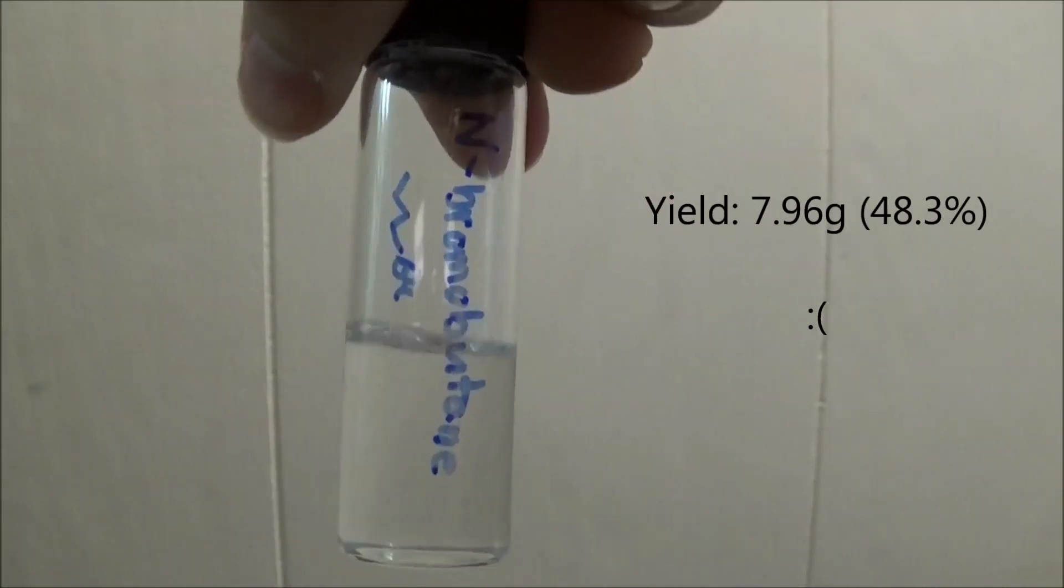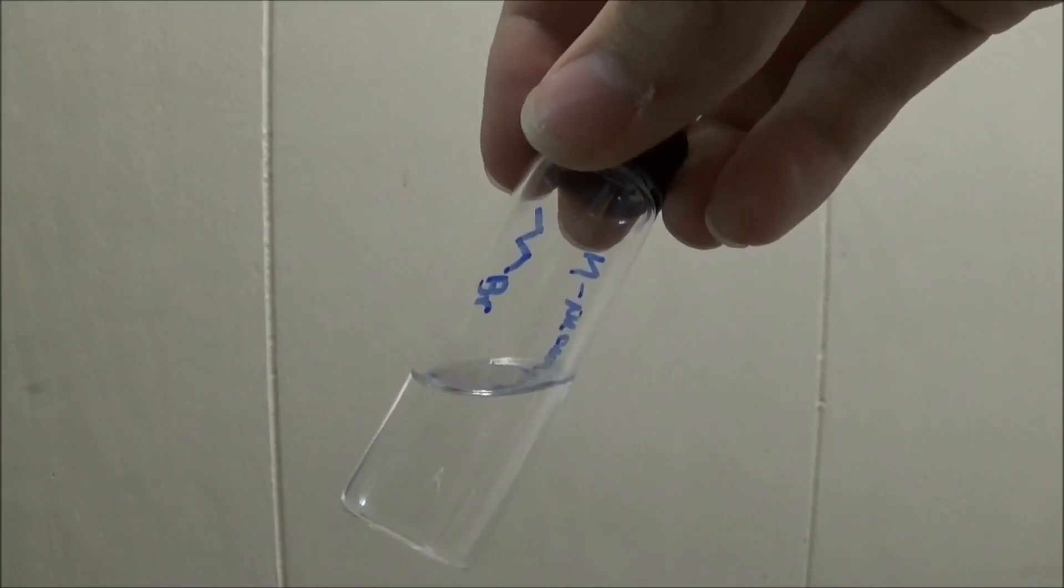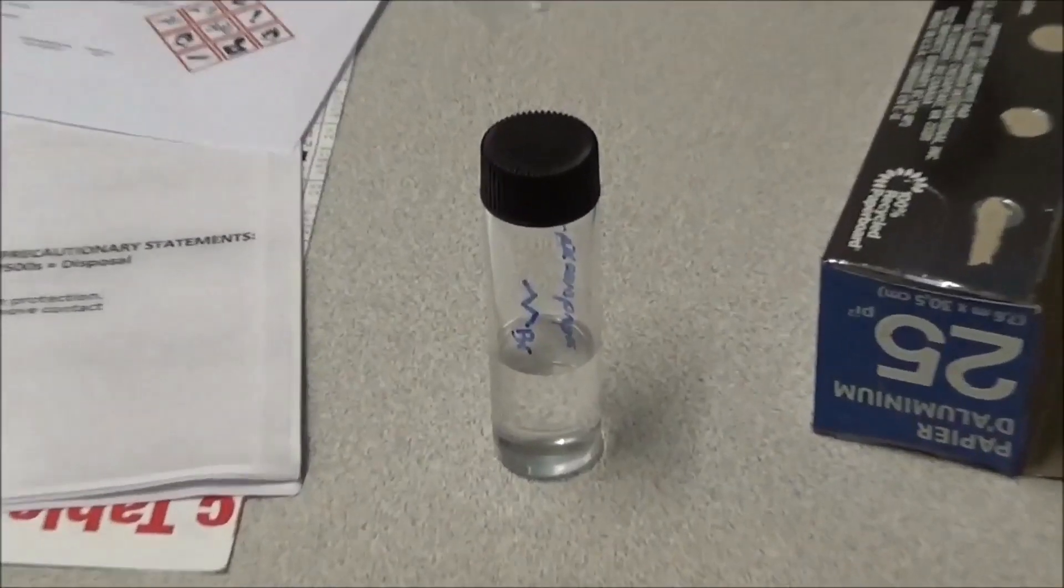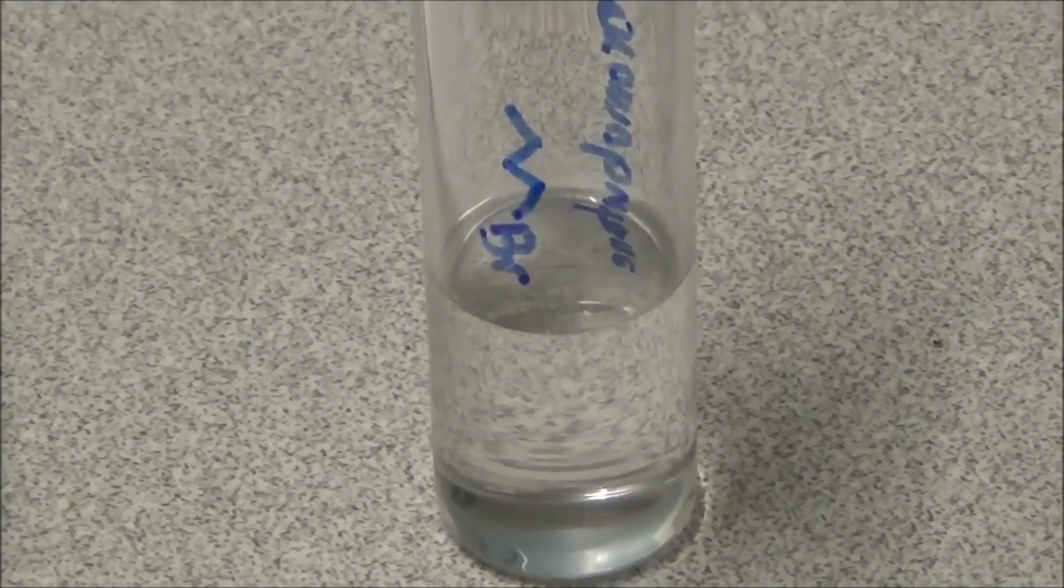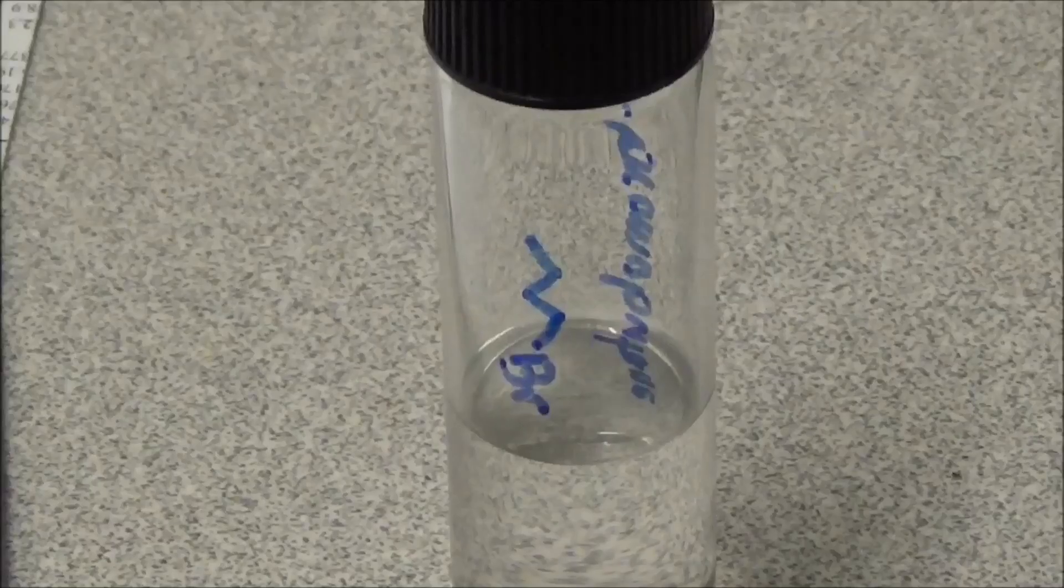The final yield was 7.96 grams, or 48.3 percent. The disappointing yield is a combination of small scale and me spilling a bunch into my heating mantle during a transfer step. This has been the preparation of 1-bromobutane. Thanks for watching, and don't forget to subscribe!